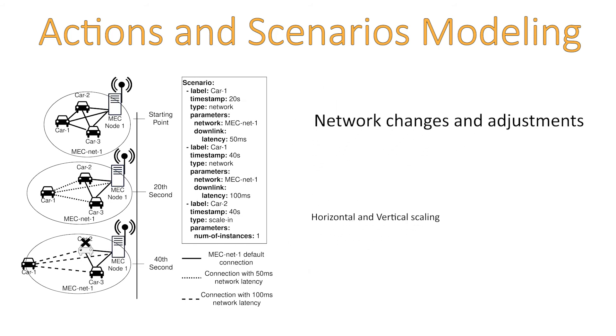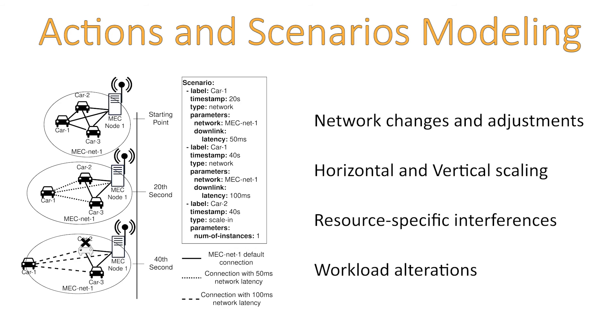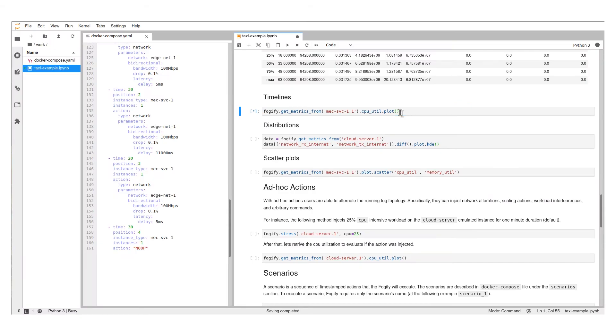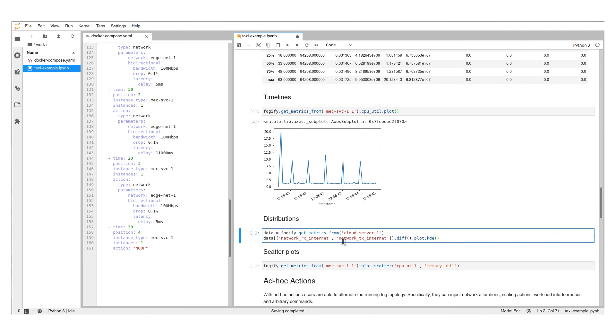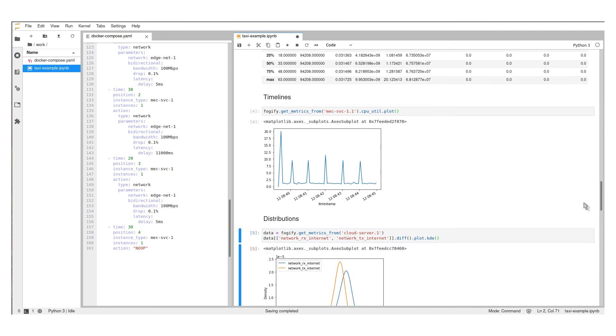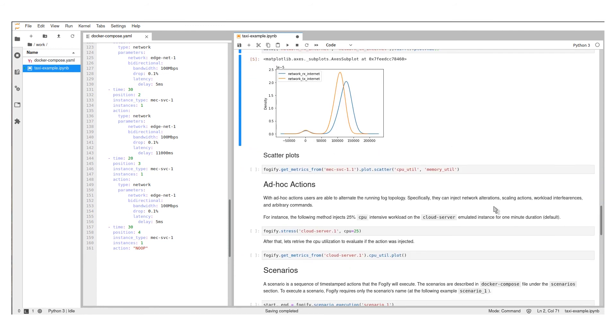Furthermore, users can change an emulated deployment at runtime through ad hoc actions such as network changes, scaling actions, and interferences. In this demo, we integrated Fogify with Jupyter Notebooks. Through Jupyter, users can manipulate emulated deployments and reveal hidden information about their systems.